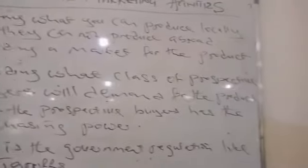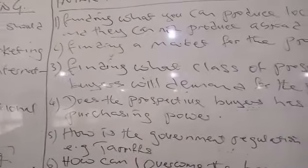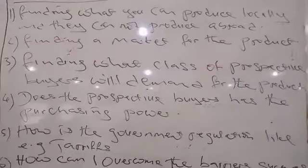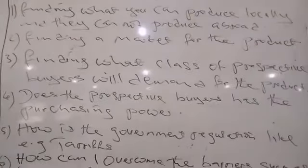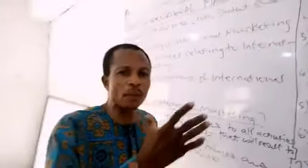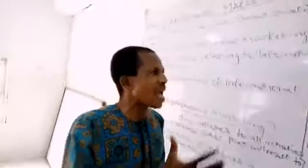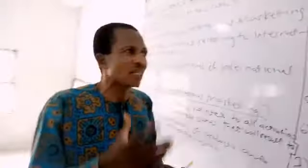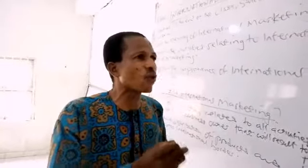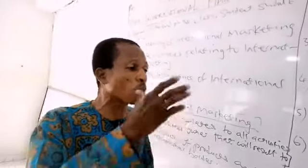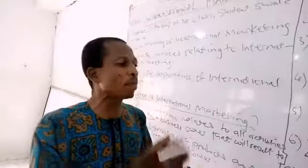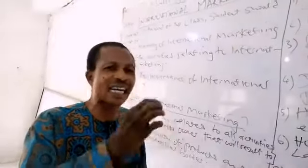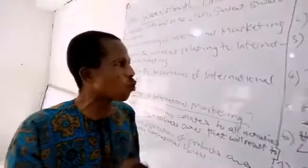Number two, you are also finding a market for the product. When you are making production locally, you must find a market for the product abroad. Who are those that will buy the product you are producing? Are they the poor or the rich? You must find a market so that you can produce those items and the buyers are already available that will buy them from you abroad.